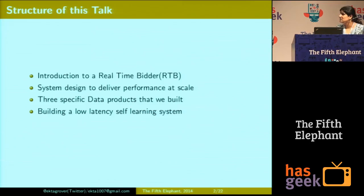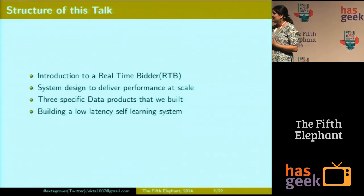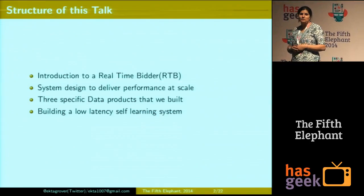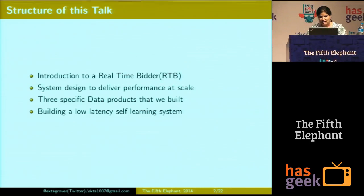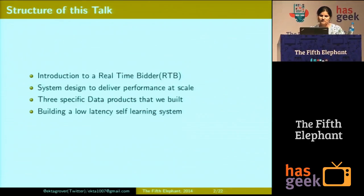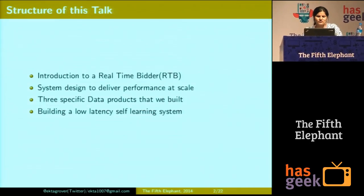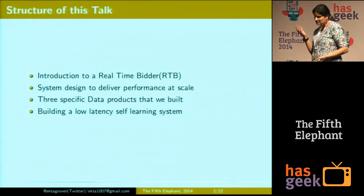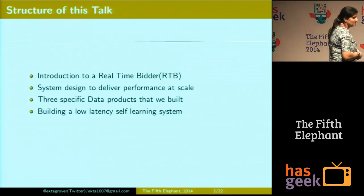With that, I'd like to introduce the structure for this talk. I'll start with an introduction to a real-time bidder, which has done a really good job of introducing what really happens in real-time bidding. I'll try to cut it down and hopefully set the context for the rest of the talk. Then we'll talk about the system design to deliver performance at scale. Performance is what we call business objectives — so how do I increase my click-through rates or CTRs, and how do I, at the same time, bring down my costs?